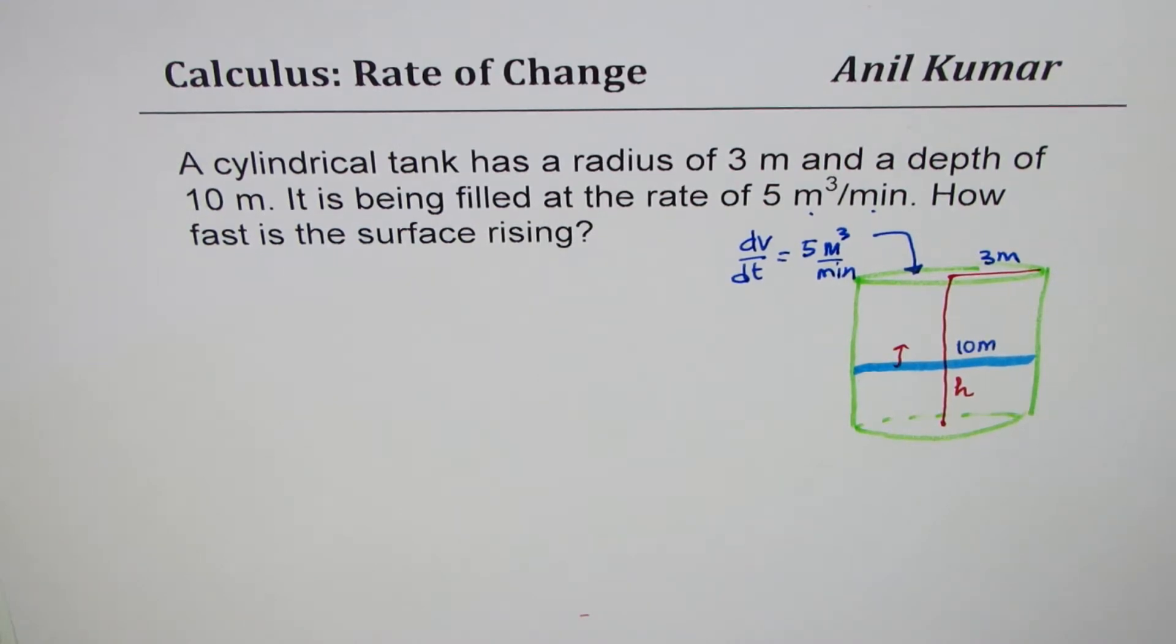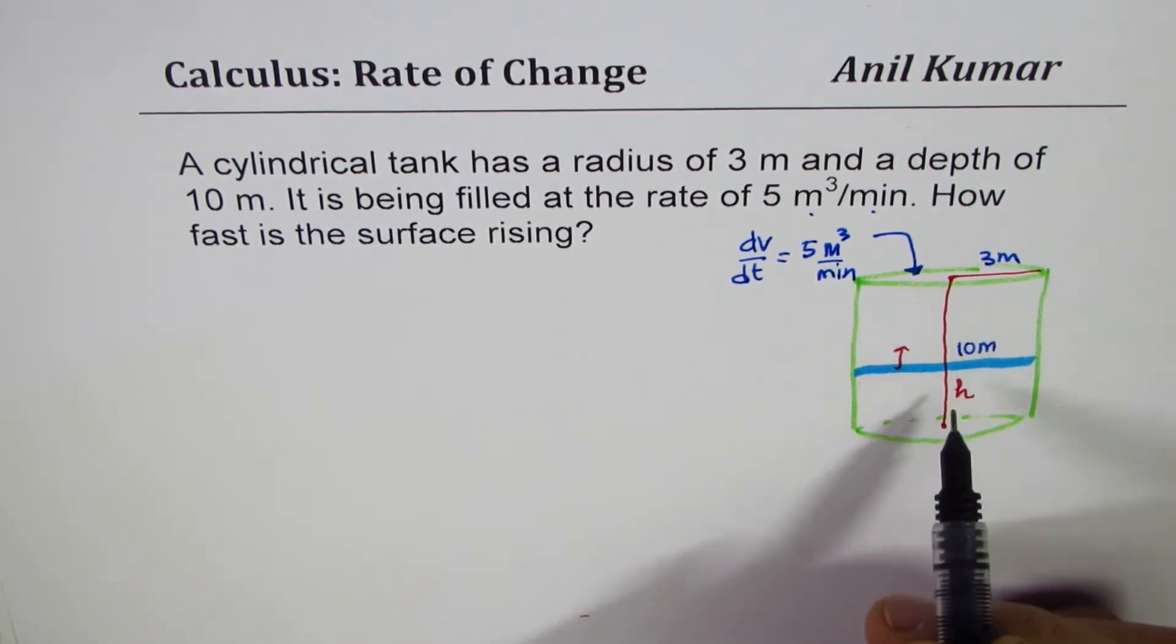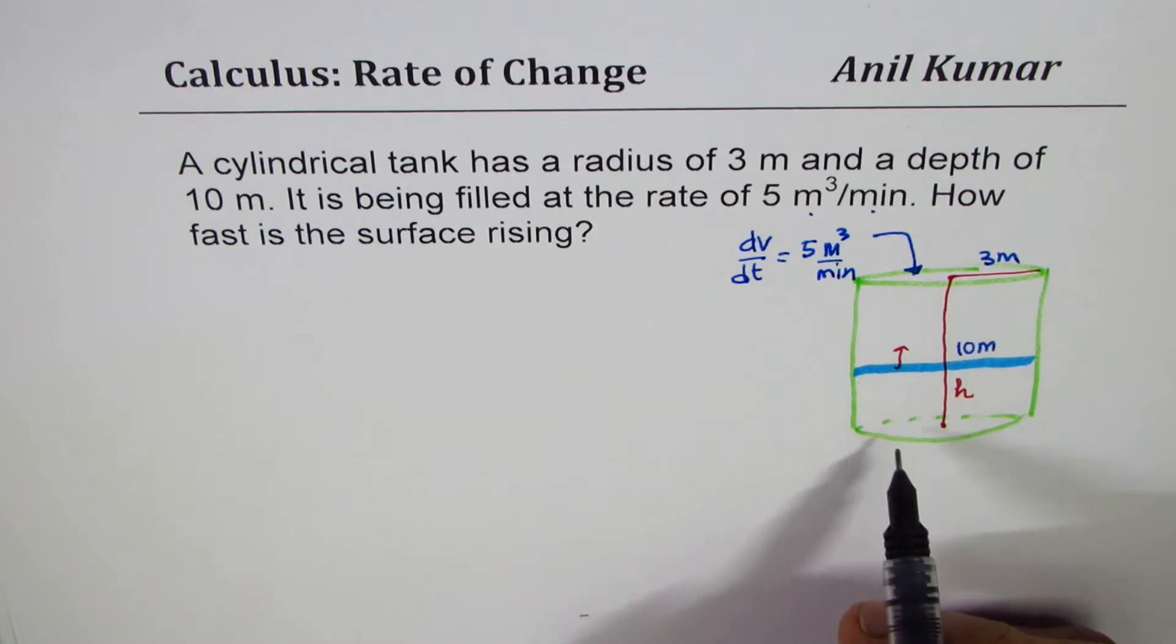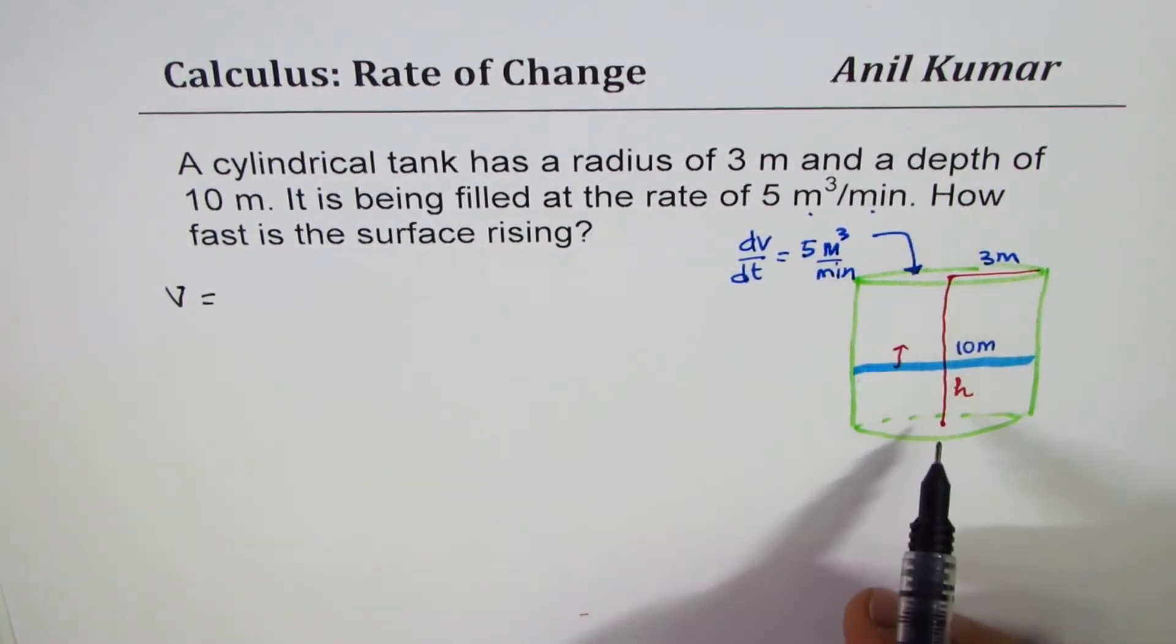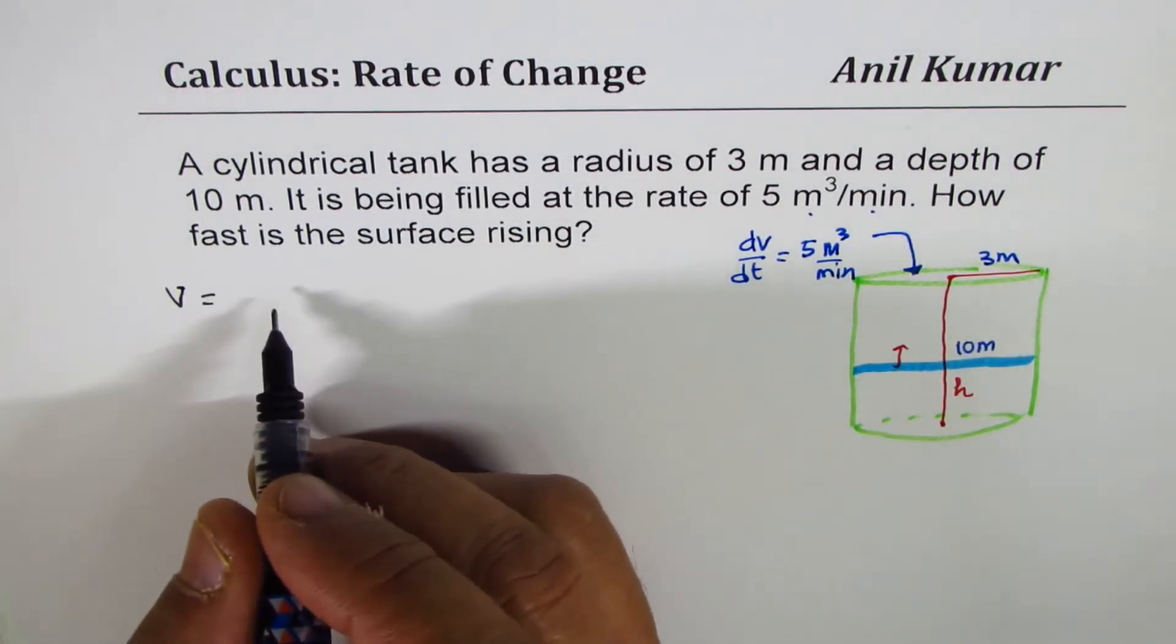So we have understood the question. What we have here is a cylinder, we're talking about volume. So what is the formula which relates volume of cylinder with radius and height? It is πr²h, right, πr²h.